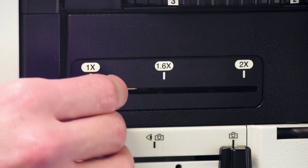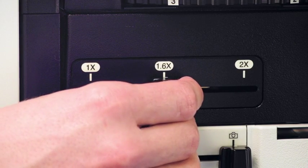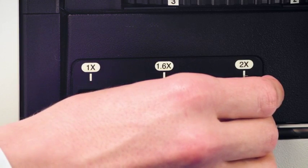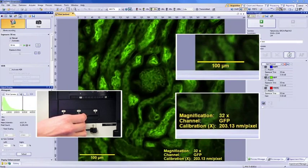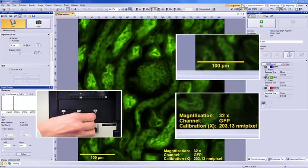An optional magnification changer with 1.6x and 2x lenses provides a similar benefit. The added magnification is saved in the scale bar and pixel dimensions without any input from the user.